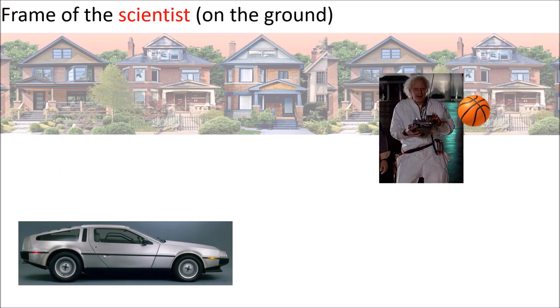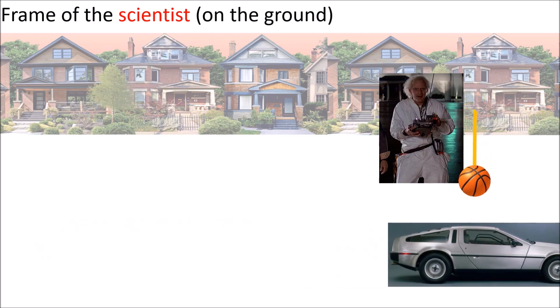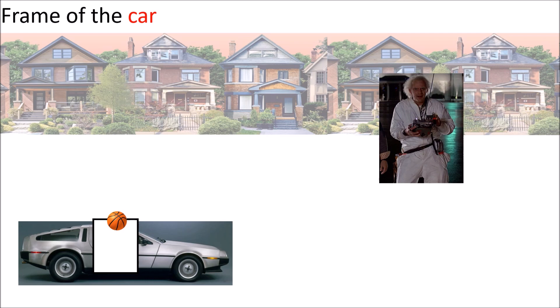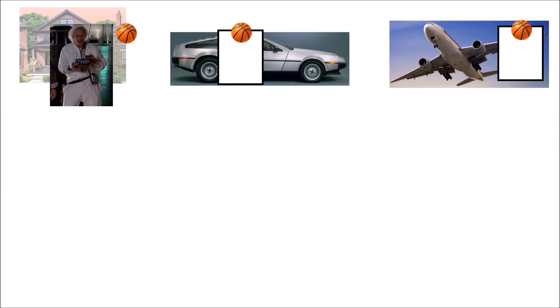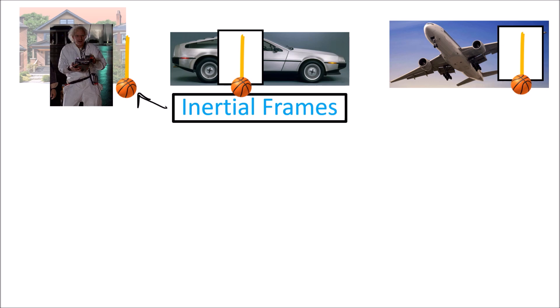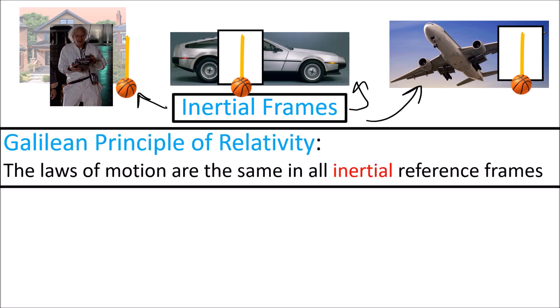In the scientist's frame, when he drops the ball, it travels straight down toward the ground. If the driver drops a ball in their car while driving at constant speed, the ball also travels straight down toward the floor of the car — exactly what the scientist saw in his own frame. Likewise, a passenger on the plane dropping a ball sees it fall straight down to the floor. The scientist, driver, and plane passenger all see the ball fall with the same motion in their own reference frames because of the Galilean principle of relativity — the laws of motion and gravity are the same in all inertial reference frames.